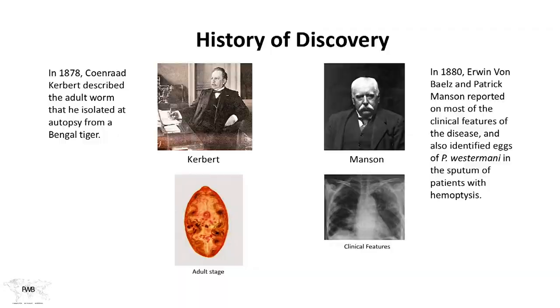There are perhaps 40 different species of Paragonimus with similar life cycles, transmitted from an invertebrate host to us through the ingestion of raw or undercooked crustaceans. The history of discovery involves two players: Kerbert and Sir Patrick Manson. Kerbert was the first to see the adult parasite in a patient, perhaps from tuberculosis, embedded in lung tissue, quite large — a centimeter and a half to two centimeters in length.